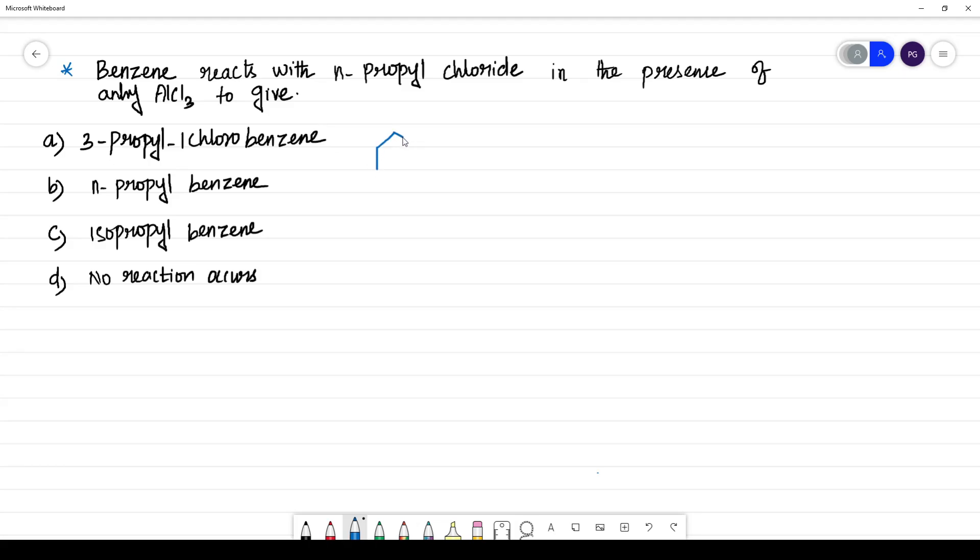And what is N-propyl chloride? Propyl has three carbons: CH3, CH2, CH2, Cl. So N-propyl chloride in the presence of anhydrous AlCl3.